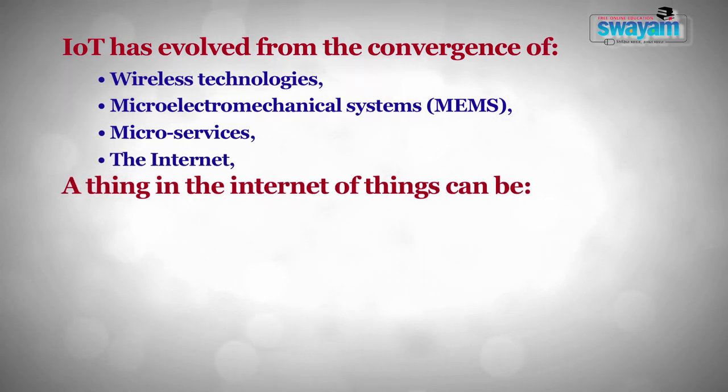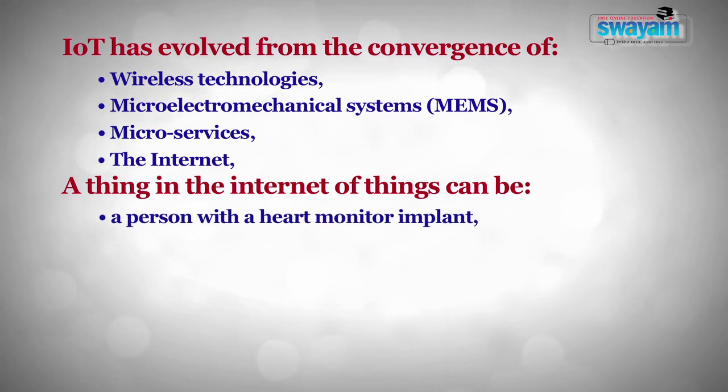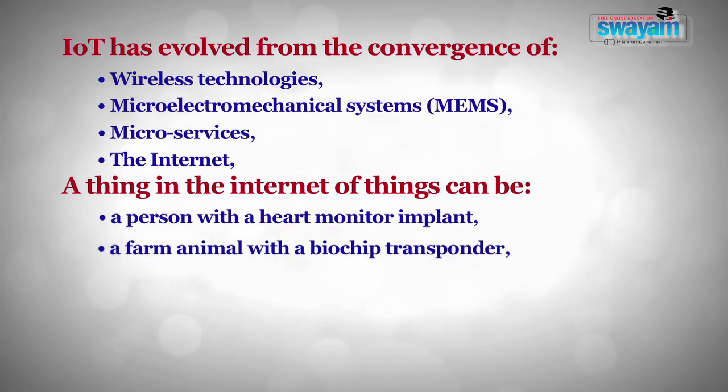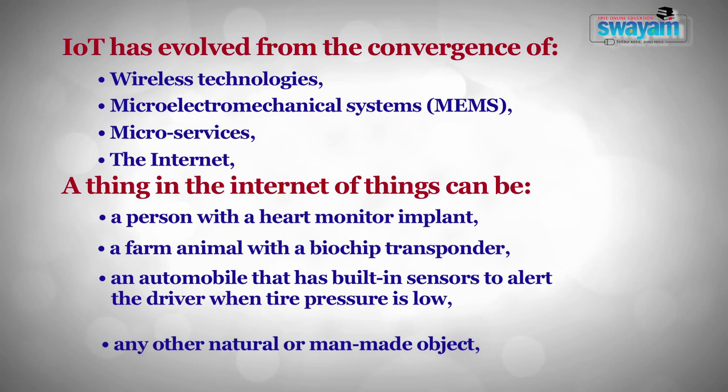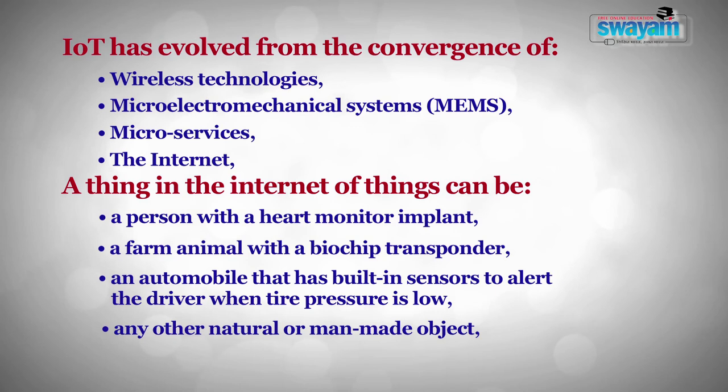IoT can be a person with a heart monitor implant, a farm animal with a biochip transponder, an automobile that has built-in sensors to alert the driver when tire pressure is low, or any other natural or man-made object that can be assigned an IP address and is able to transfer data over a network. The Internet of Things is a system of interrelated computing devices, mechanical and digital machines, objects, and people provided with unique identifiers and the ability to transfer data over a network without requiring human-to-human or human-to-computer interaction.